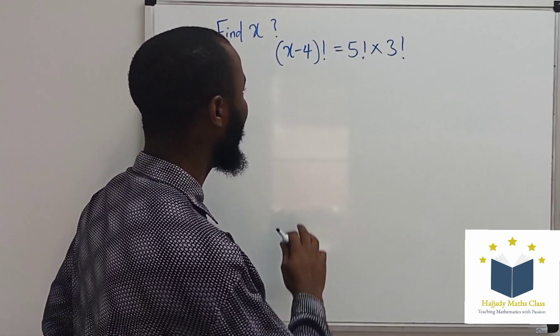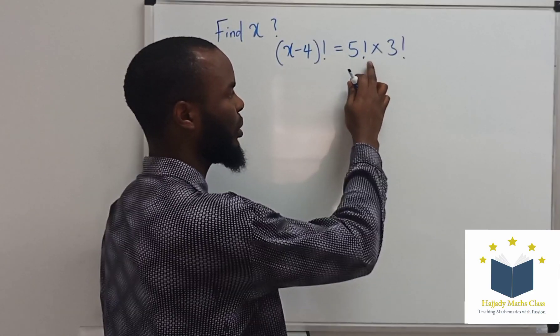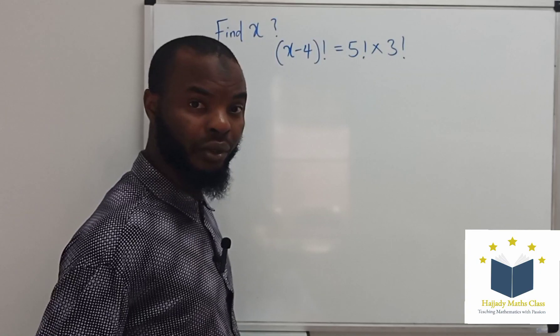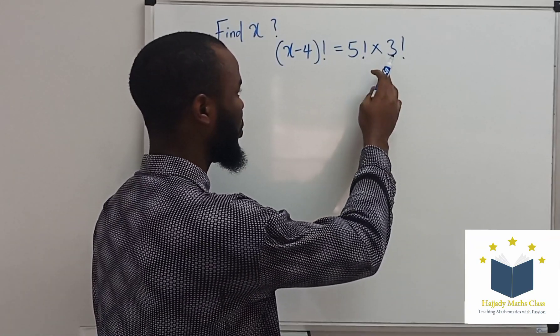Here, I'm having x minus 4 factorial equals 5 factorial multiplied by 3 factorial. I believe you know the rules of factorial. Now, I'm going to start with this.